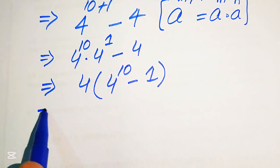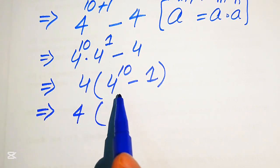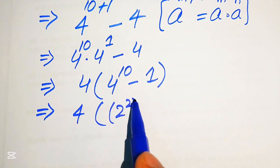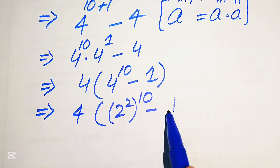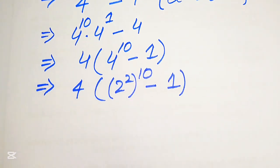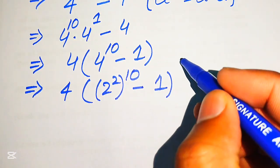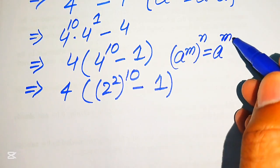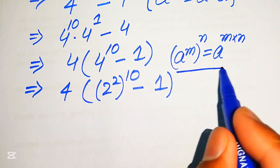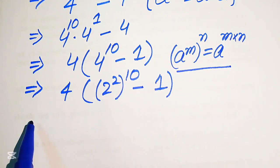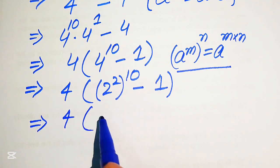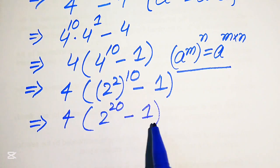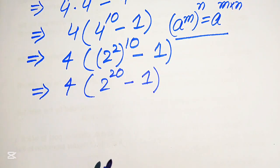Now we need to focus on the term 4 to the power of 10. We rewrite 4 as 2 squared, so it becomes 2 squared to the power of 10. We apply another exponent law: a to the power of m to the power of n equals a to the power of m multiplied by n. So we multiply the two exponents and get 2 to the power of 20, minus 1.